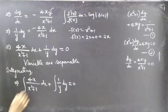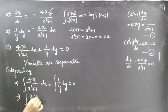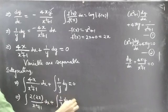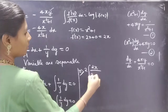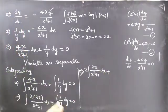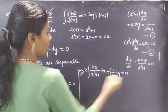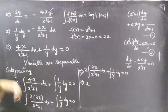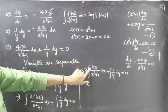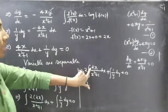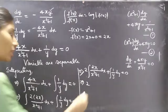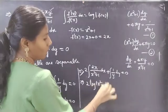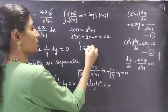Taking the 2 outside the integral: 2 ∫ 2x/(x² + 1) dx + ∫ (1/y) dy = 0. The integrand is now of the form f'(x)/f(x) = 2x/(x² + 1), so this integral equals log|x² + 1|. We also know that ∫ (1/y) dy = log|y|. So we get 2 log|x² + 1| + log|y| = constant.